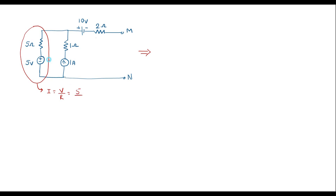So V is 5 and the resistor value is 5, so the magnitude of the current source is 1 amp. Now we use a 1 amp current source with the 5 ohm resistor connected in parallel with it. The head end is positive and the tail end is negative, so this 5 ohm resistor should be connected in parallel with the current source.